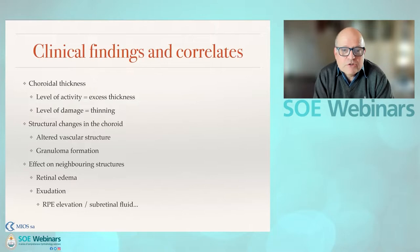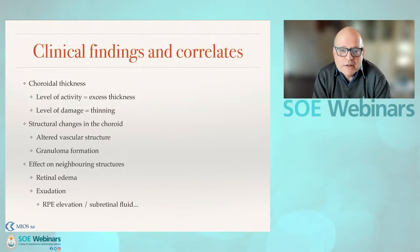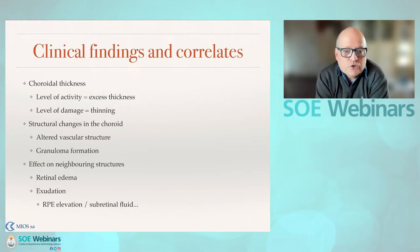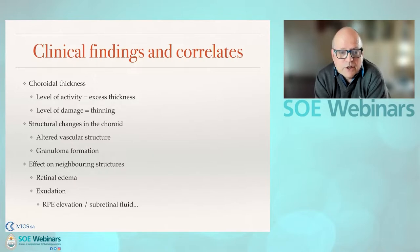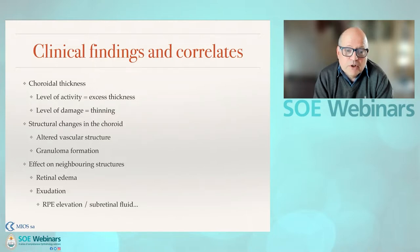Active choroidal disease tends to give you increased thickness as inflammatory cells come in. Once the disease has run its course and you see more damage, it leads to thinning. Thinning can be visible as disappearance of vessels in very thin atrophic areas. There'll be altered vasculature, particularly in a scarring phase, but you can also have displacement of vessels when granulomas form — particularly if large, as you might see with tuberculosis.